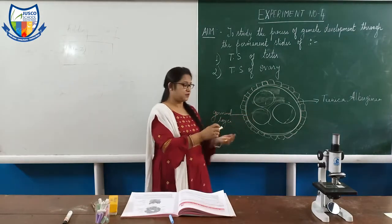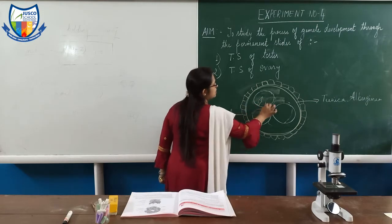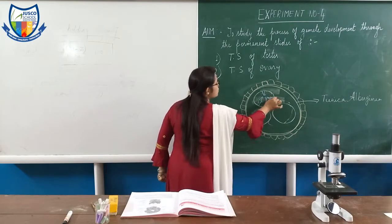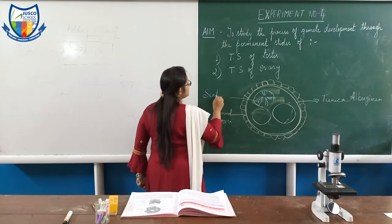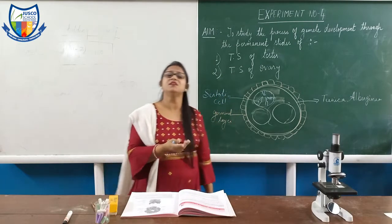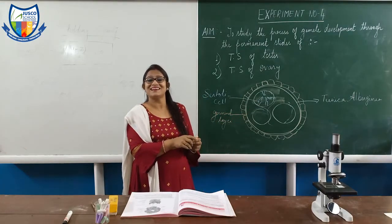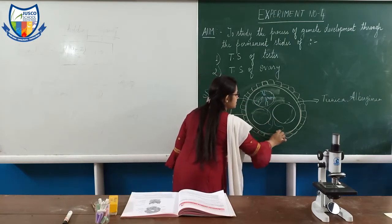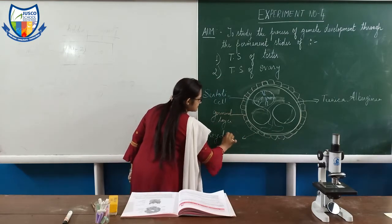Now these seminiferous tubules contain long tubular, pyramid-shaped structures. This pyramid-shaped structure is called as Sertoli cells. You can call them mother cells or nurse cells. These seminiferous tubules are segregated inside by interstitial tissue, which is called as Leydig cells.